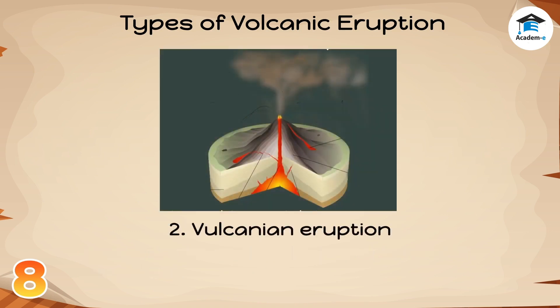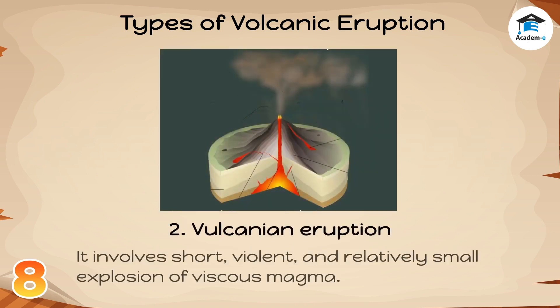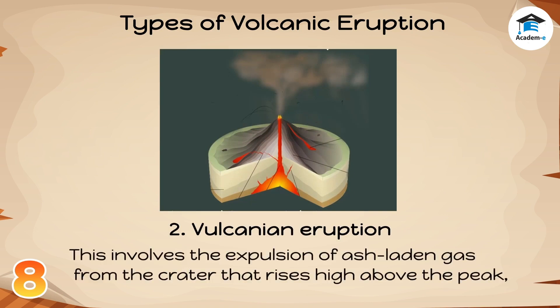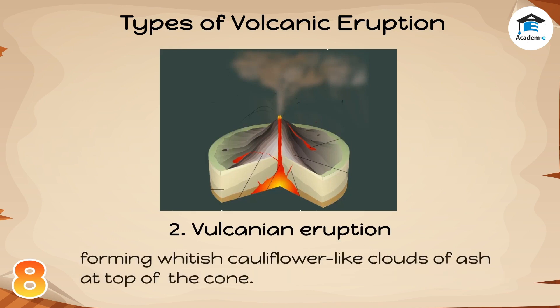2. Vulcanian Eruption: It involves short, violent, and relatively small explosions of viscous magma. This involves the expulsion of ash-laden gas from the crater that rises high above the peak, forming whitish cauliflower-like clouds of ash at the top of the cone.